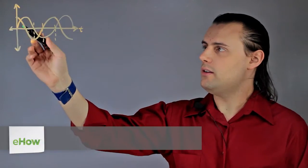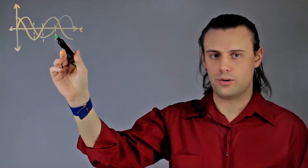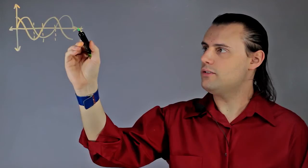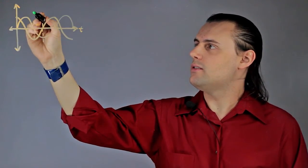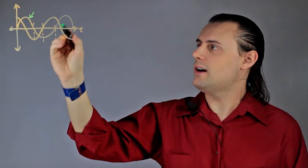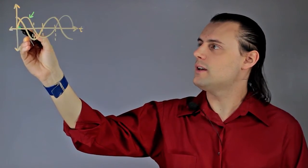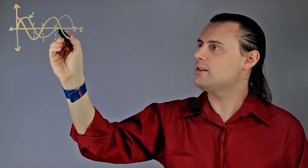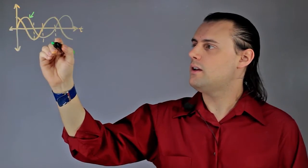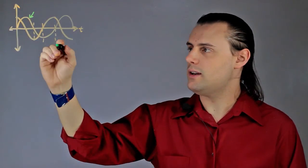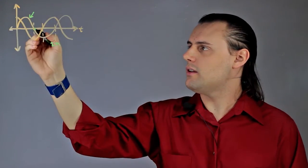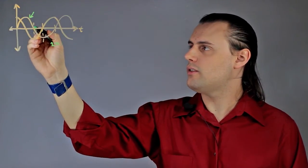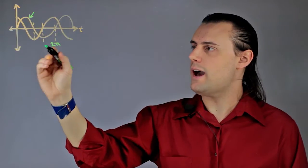So here I have a plot of two oscillatory functions that oscillate in time, and you could probably recognize this one as sine where it starts at zero, increases and decreases, and completes one revolution. And if time is measured in radians, this would be 2π, and this point right here, the first intersection, would be half of that, so just π.